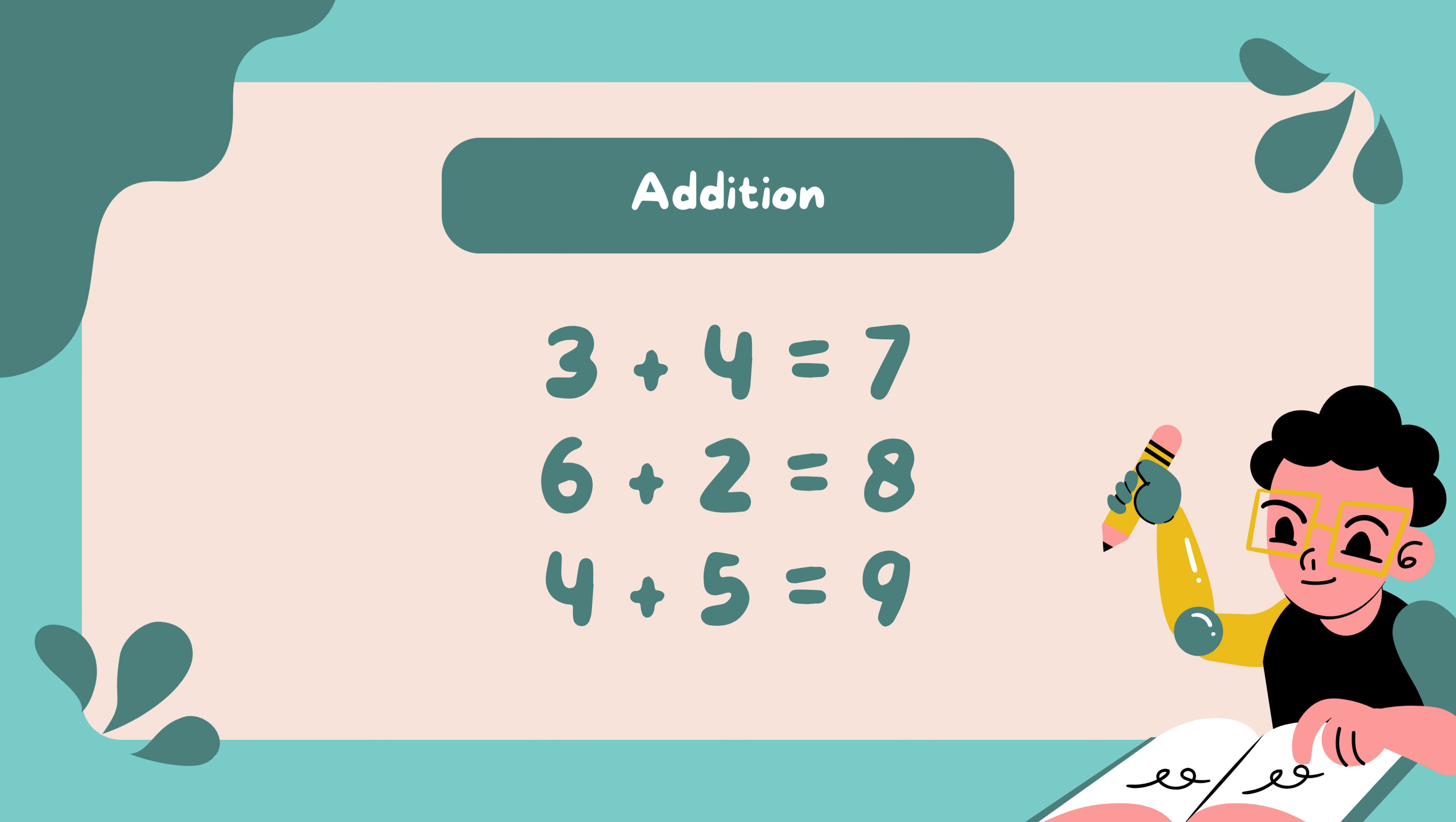Addition: 3 plus 4 is equal to 7. 6 plus 2 is equal to 8. 4 plus 5 is equal to 9.